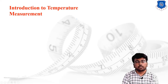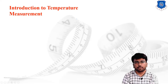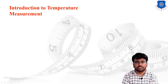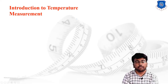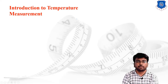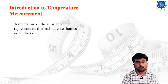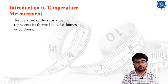Temperature defines the thermal condition or thermal state of a given body with comparison to some reference. The measurement of absolute temperature is meaningless — we are supposed to compare the parameters. Also remember, we cannot measure temperature directly. We are supposed to measure different physical quantities and then calculate the value of temperature in our defined unit systems. From those parameters, we simply calculate the value of temperature.